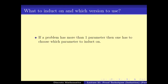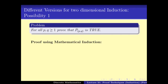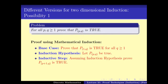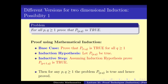A problem can have more than one parameter, and in that case we might have to induct on multiple parameters — again there are quite a number of different versions that one can apply. Since we are dealing with multiple parameters, the goal is to ensure that all the possible points are covered, which in this case is the two-dimensional space. So if you have to prove that for all P, Q the problem Pk is true, there are various ways of doing it.